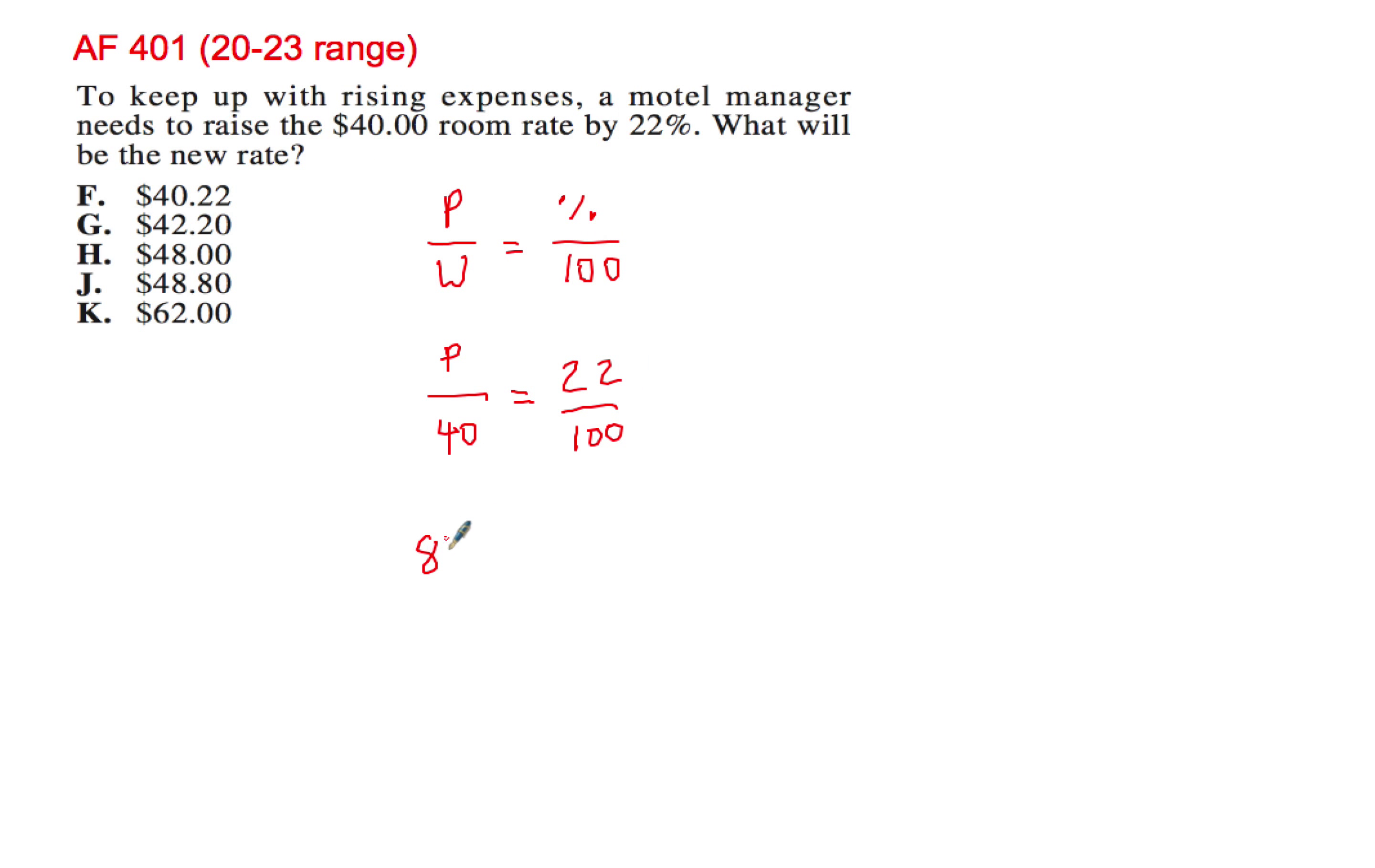880 equals 100P, and divide both sides by 100, so you get $8.80 as your missing part.